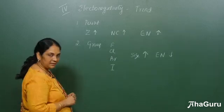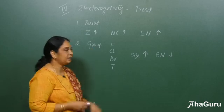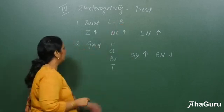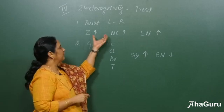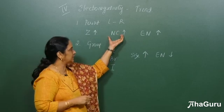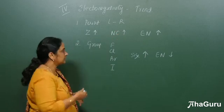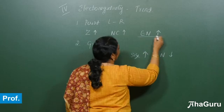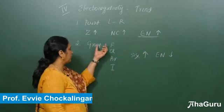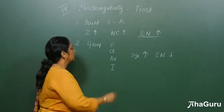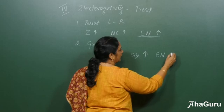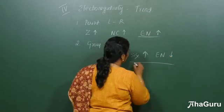Now let us see the trend. Along the period from left to right, the atomic number increases, nuclear charge increases, size decreases, and so the electronegativity value increases. Coming to the group from top to bottom, the size increases and therefore the electronegativity value decreases.